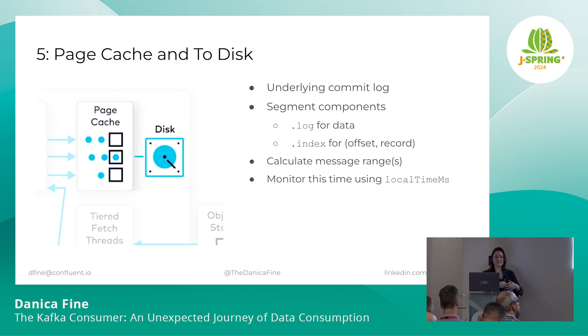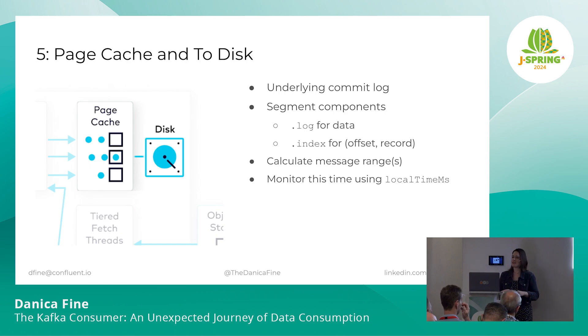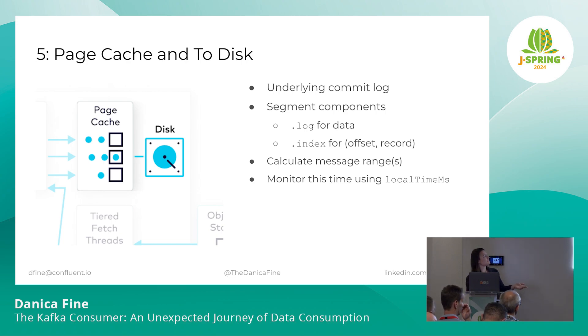When the IO threads are parsing this request — remember our request contains, for a topic partition, which offset we want to start from, and the mins and maxes for the chunk of data we are requesting — they're going to use that offset in the index file to figure out where the starting record is for that range of records we're requesting, then use the requested size of data to configure the range of records to return. So the IO threads figure out exactly what range of data we're trying to send back, up front, before it even touches any of the data on the files.